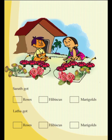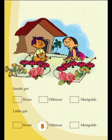Then find out how many marigolds did Sharath get. Yes, Sharath got five marigolds. Then find out how many flowers Lata got. Yes, Lata got three rose flowers, five hibiscus and three marigolds. All of you complete this activity in your textbook.